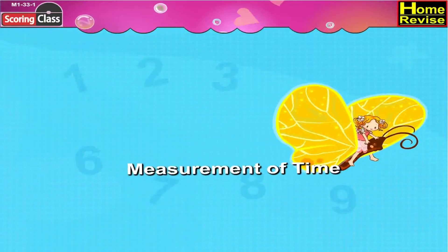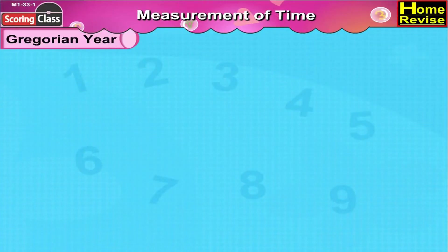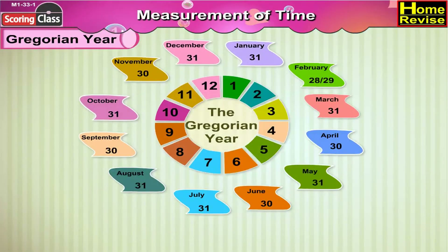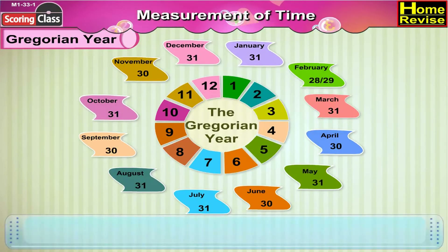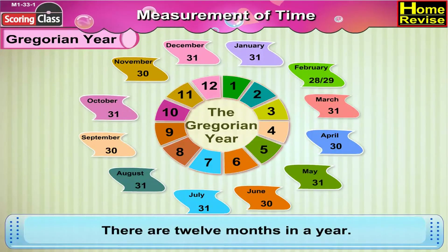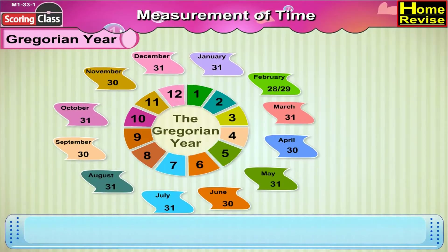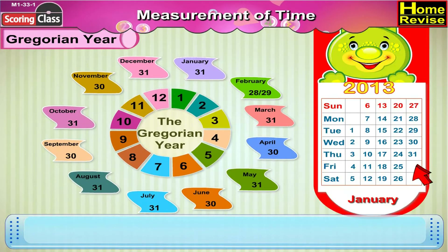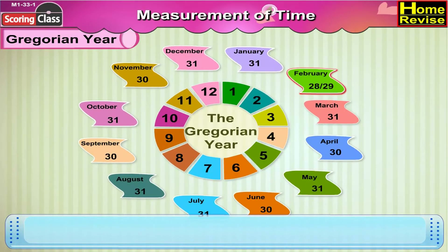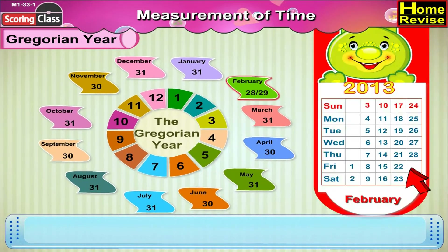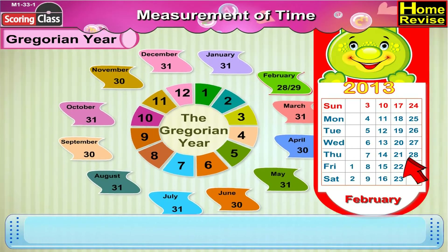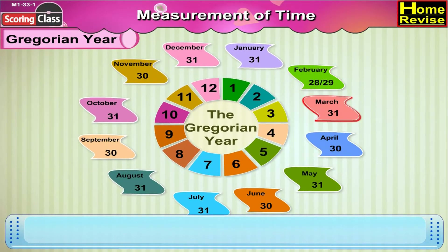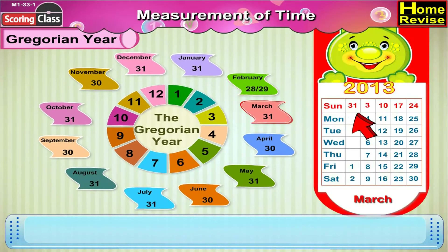Measurement of Time. Months of the Gregorian Year. There are 12 months in a year. The first month is January, which has 31 days. Next is February, which has 28 to 29 days. The third month is March, which has 31 days.